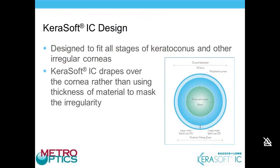The Kerasoft IC lens is designed to fit all stages of keratoconus and other irregular corneas. The IC stands for irregular cornea. The lens drapes over the cornea rather than using thickness of material to mask the irregularity — we do not want excess tear pooling underneath this lens. Because it drapes over the irregularity, a cylindrical component will come through in over-refractions. This lens is essentially a powerful soft toric lens, allowing the cylindrical component to be incorporated into the correction.